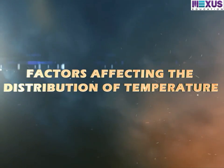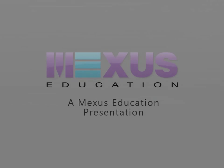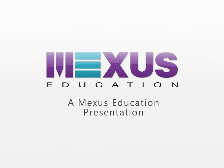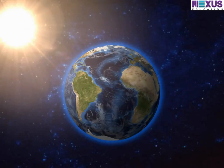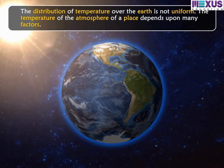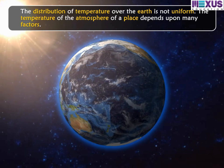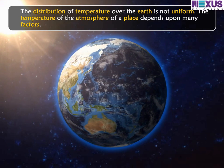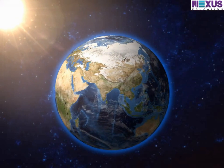Factors Affecting the Distribution of Temperature. The distribution of temperature over Earth is not uniform. The temperature of the atmosphere of a place depends upon many factors. Let us learn about them one by one.